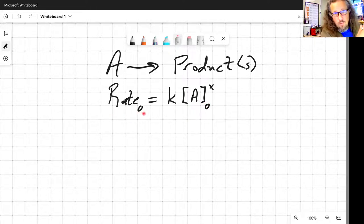And when we do that, we can determine the value of x based on comparing two runs. So that gives us a standard rate law expression.